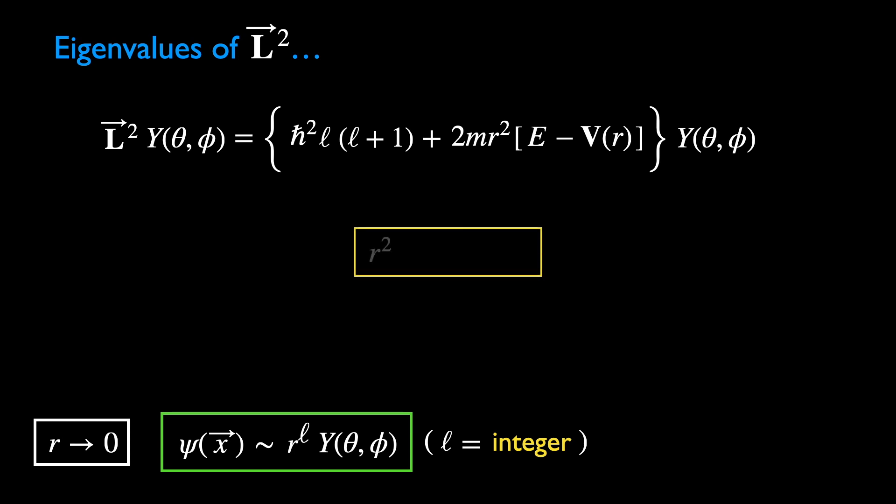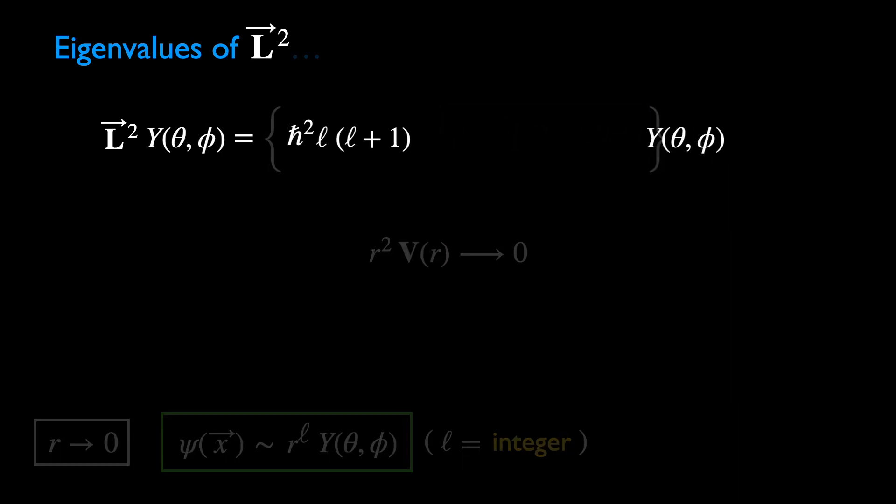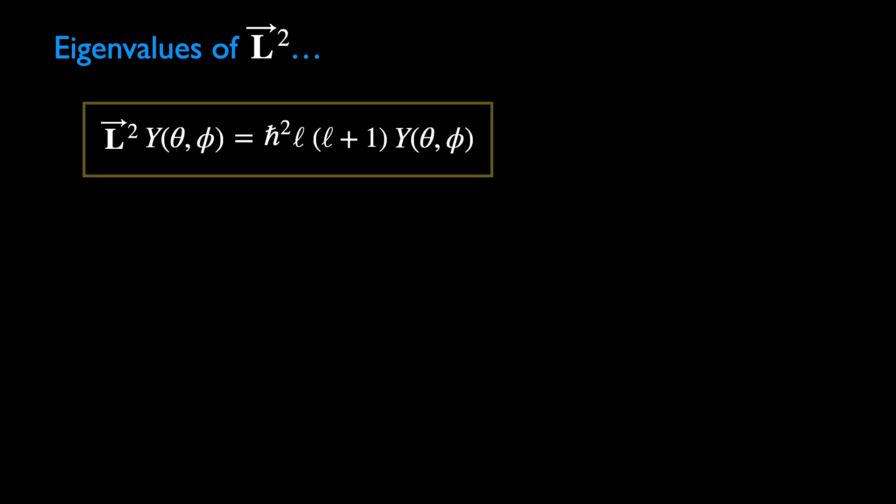We assume that r-square times the potential V goes to 0 as r goes to 0. This means V must diverge slower than quadratic power as r approaches 0. If this condition is met, then we may drop the term in the blue box.